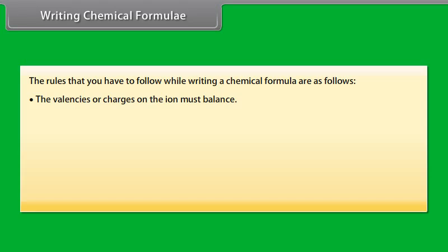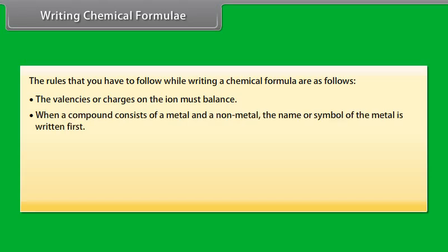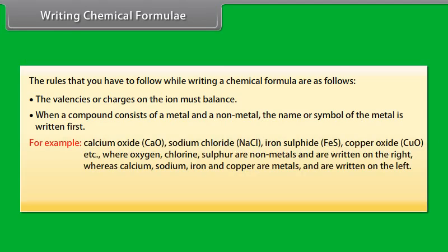Valency can be used to find out how the atoms of an element will combine with the atoms of another element to form a chemical compound. The valencies of some simple and polyatomic ions are given in table. The rules that you have to follow while writing a chemical formula are as follows. The valencies or charges on the ion must balance.